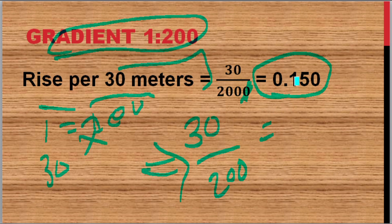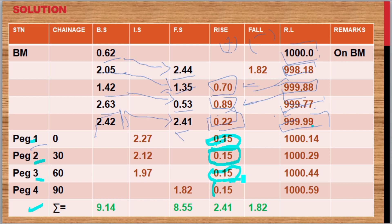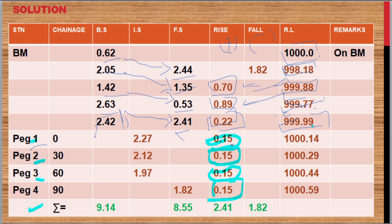This value of 0.15 is the constant applied throughout. Our land had a rising gradient, so 0.15 is applied to all four pegs — peg 1, peg 2, peg 3, and peg 4. We write that value into all our data, inputting 0.15 in the rising column for all four pegs.